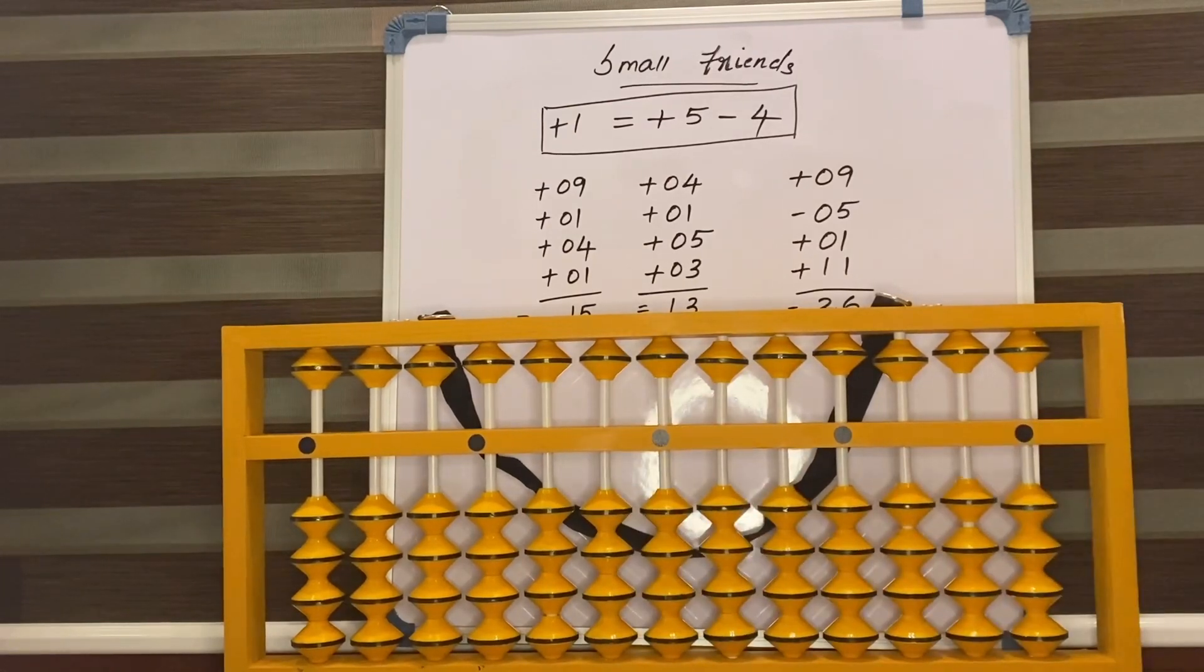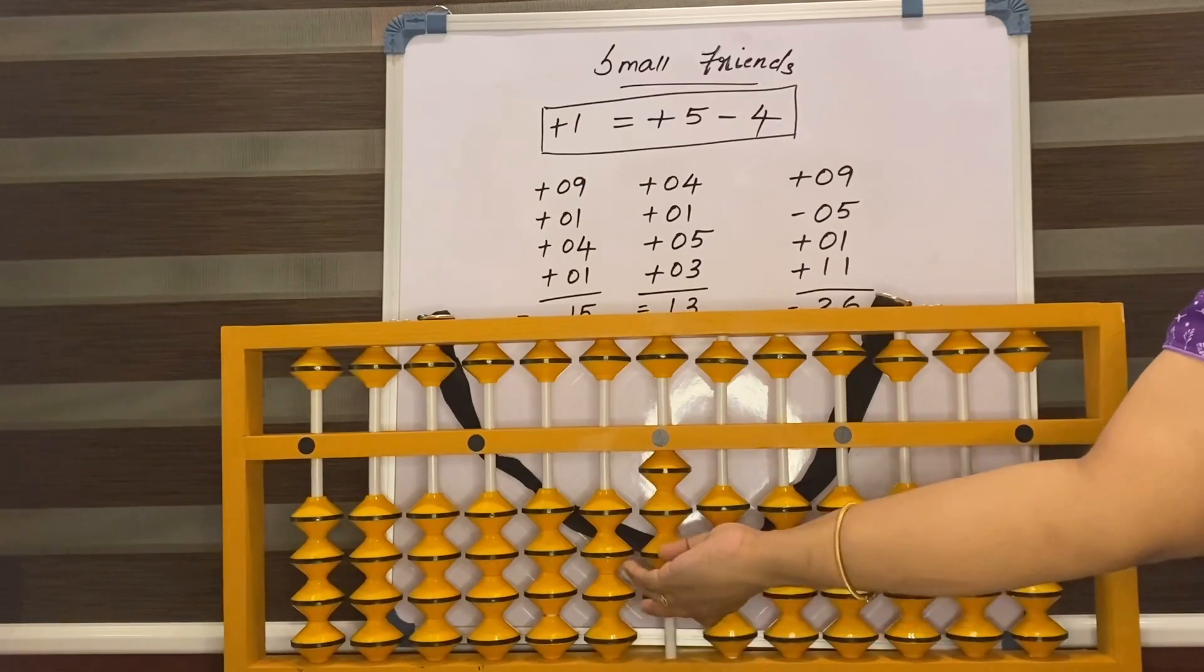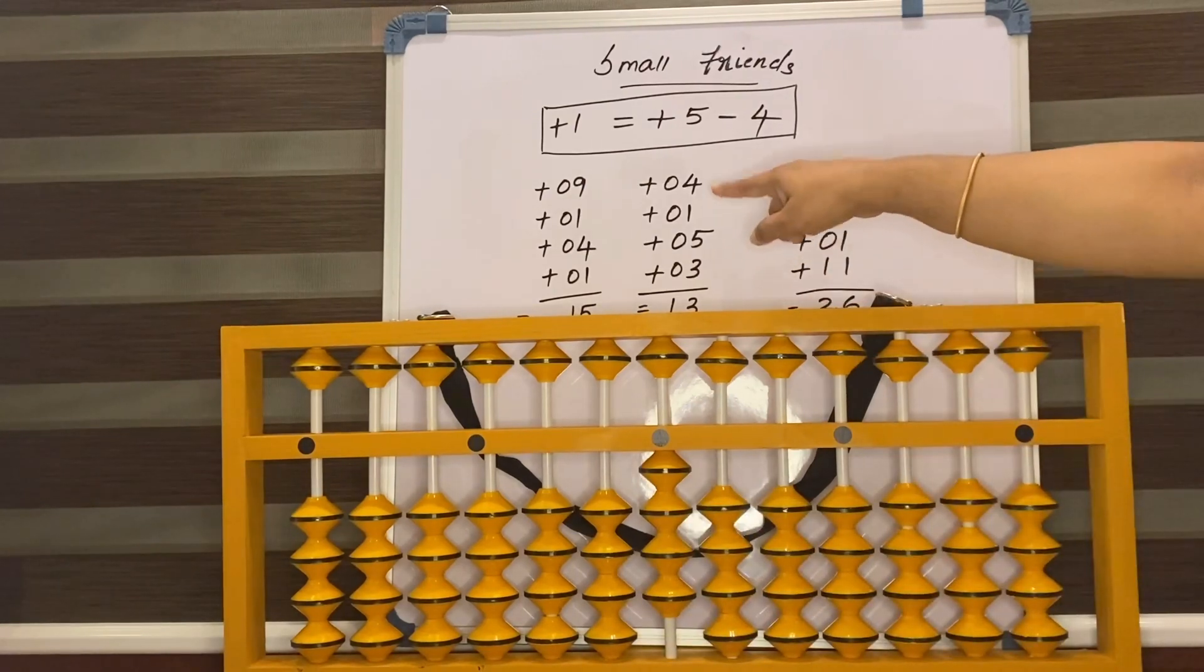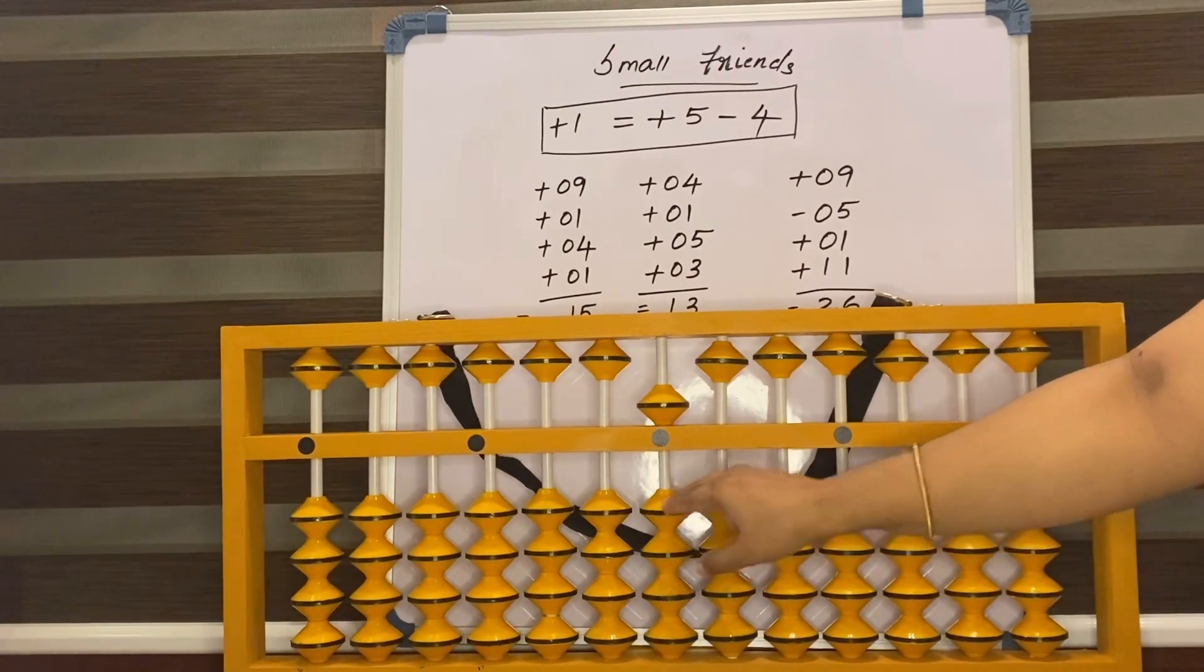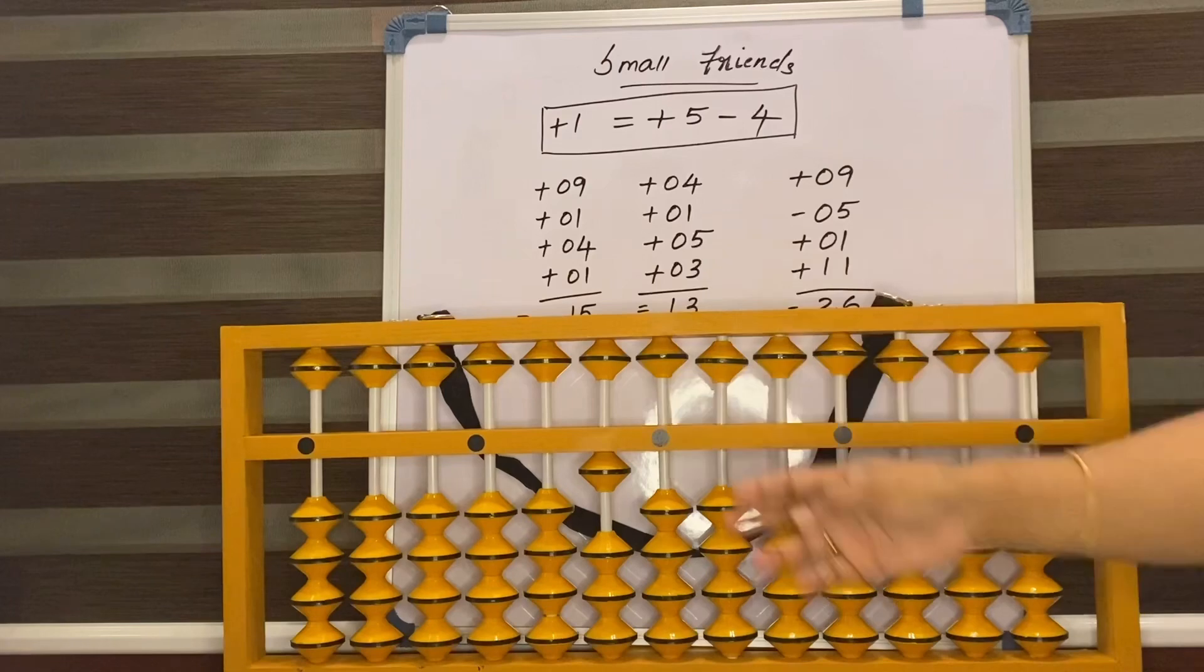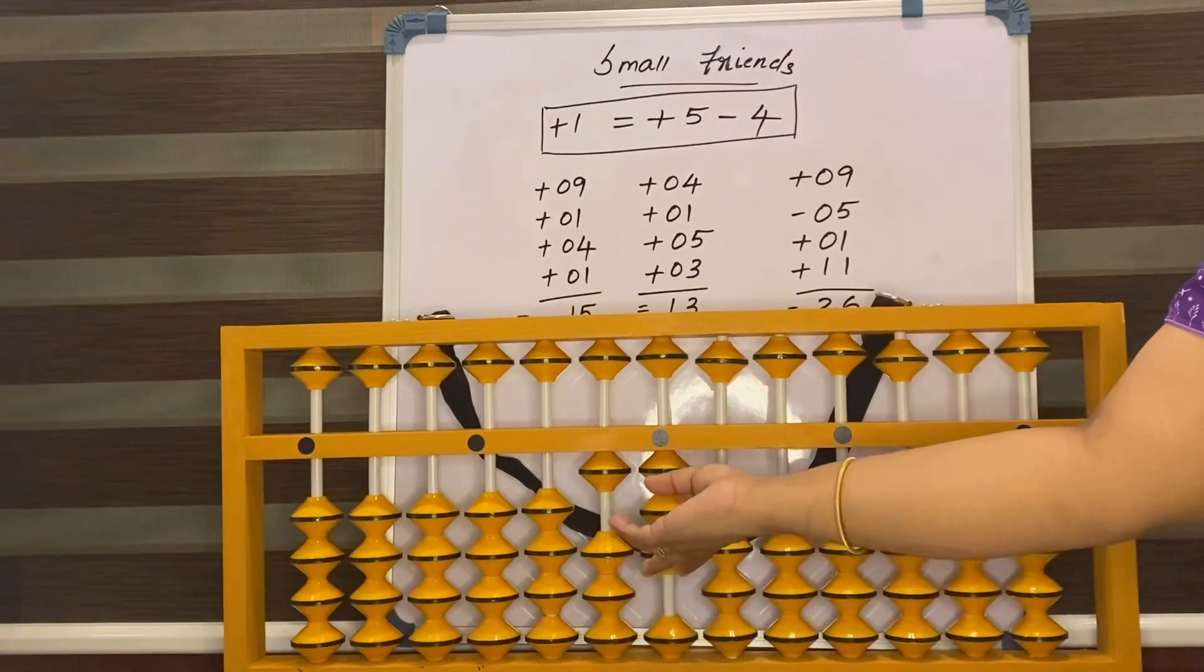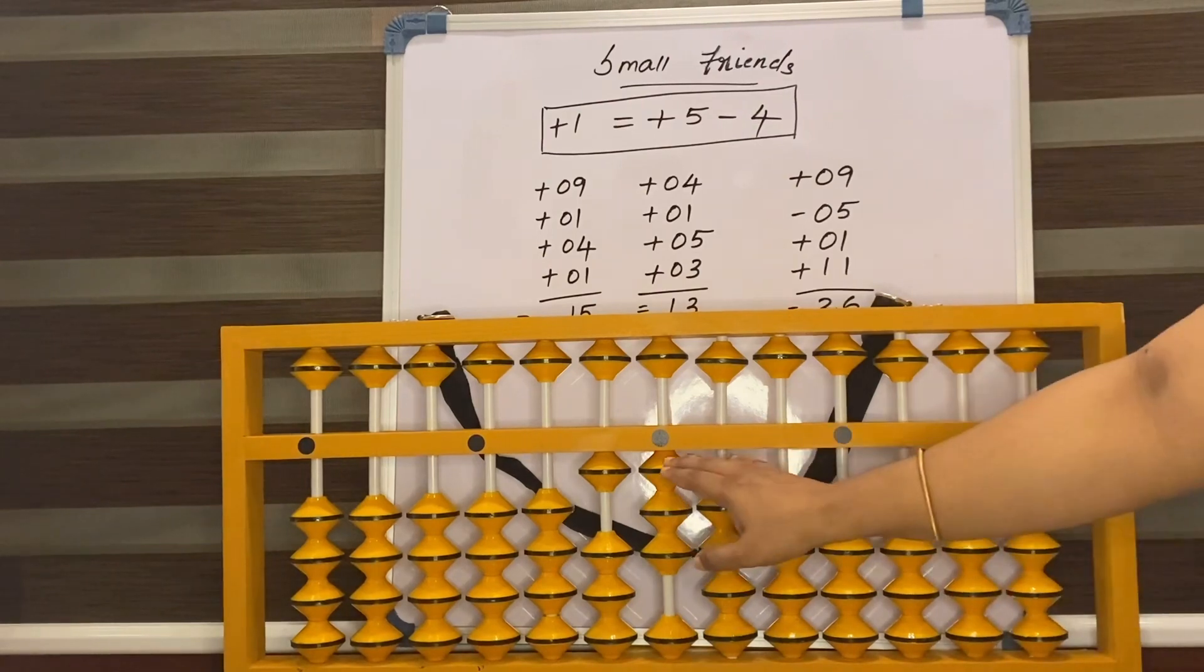Set 0. One more sum. 4, 1. How to add 1? Add 5 less 4. Again 5. How to add 5? Add 10 less 5. 3. Direct 3. What is the answer? Set 0.